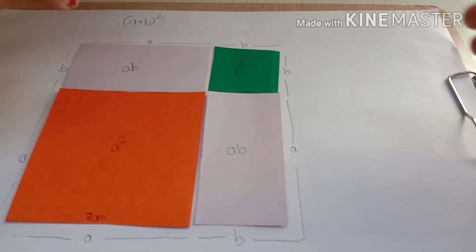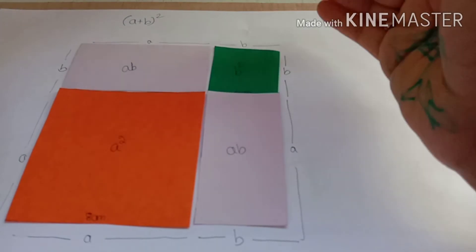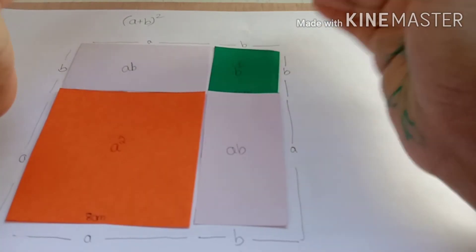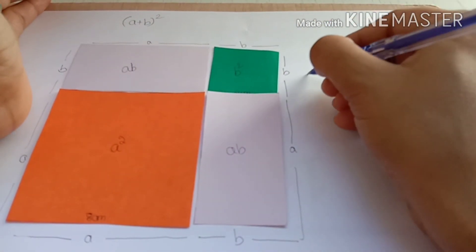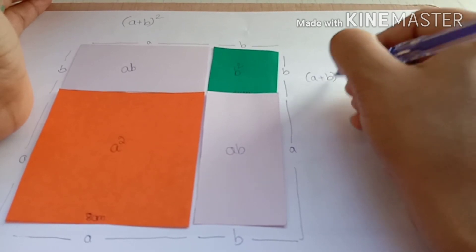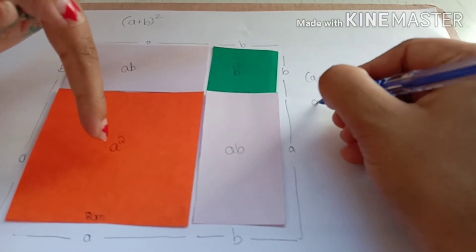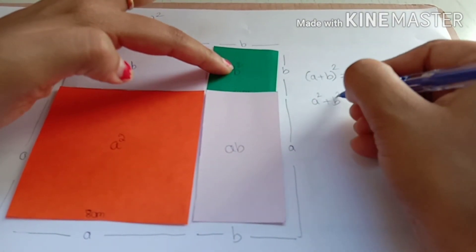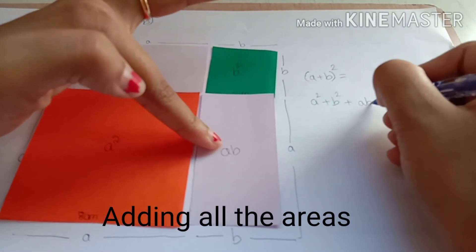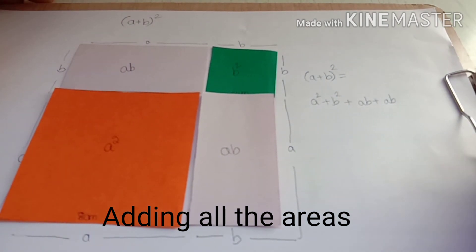Now I am going to write down the squares and rectangles inside this bigger square. Then I will get (a+b)² is equal to a² plus b² plus ab plus ab.